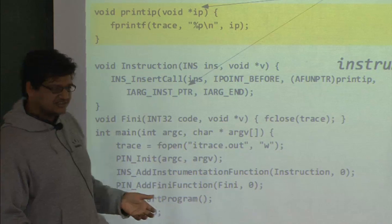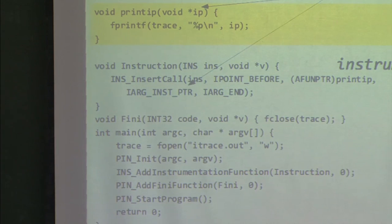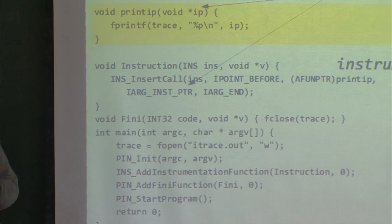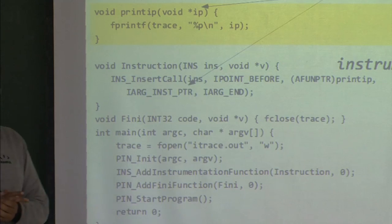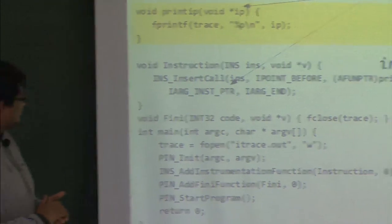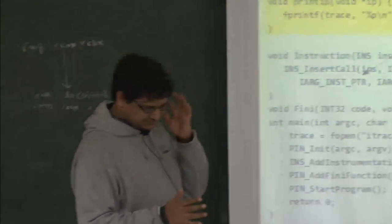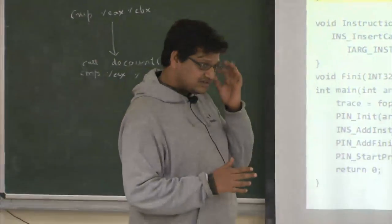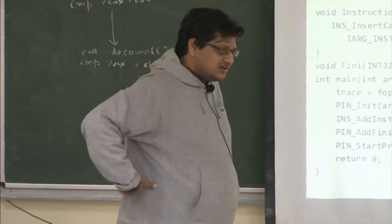IARG_INST_PTR is defined by the PIN API — it gives the address of the current instruction being instrumented. It is a macro that expands to IARG_UINT32, INS_Address(ins).